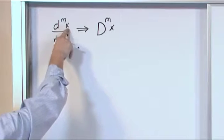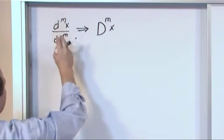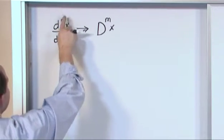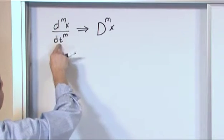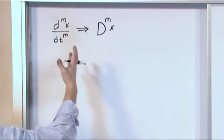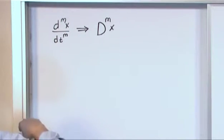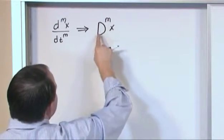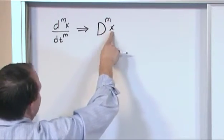The x is sitting out here much like this x is sitting out here. You can kind of think of this guy's operating on x. This whole derivative, this nth derivative with respect to t is operating on x here. That's what gives us the derivative of that guy. Well this is operating, this nth derivative, capital D is operating on x.